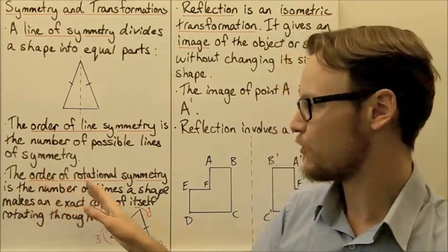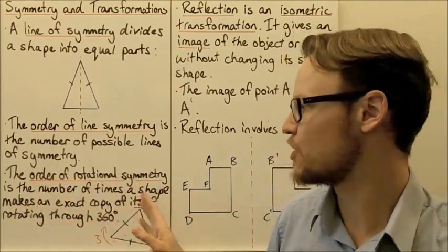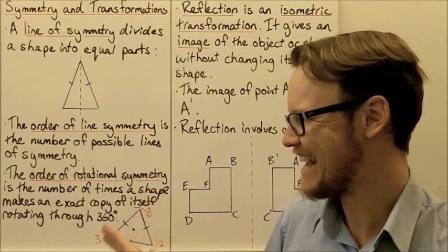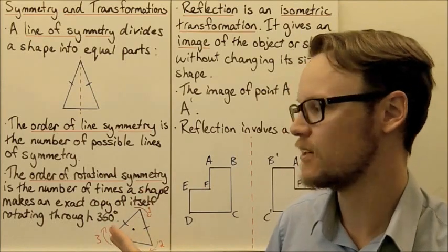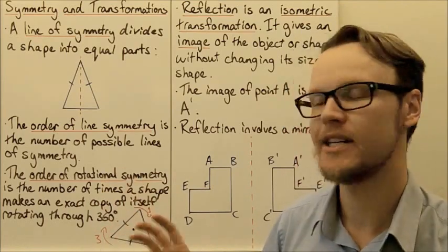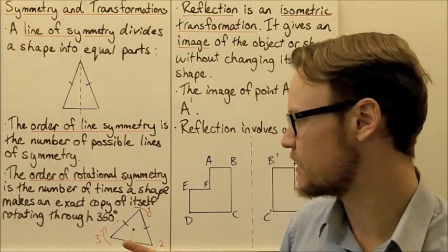The order of rotational symmetry is the number of times a shape makes an exact copy of itself if you were rotating it through 360 degrees.